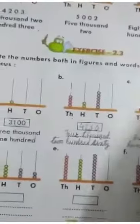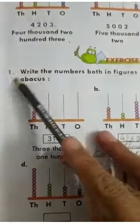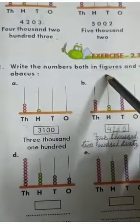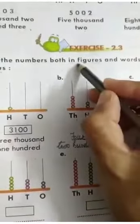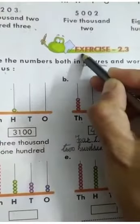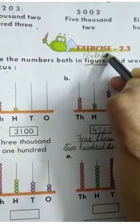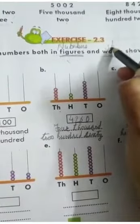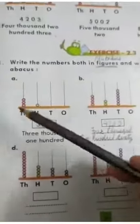Now let us do exercise 2.3. The first question is: write the numbers both in figures and words. Figure means numbers, and words means spelling, shown on each abacus.